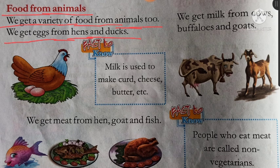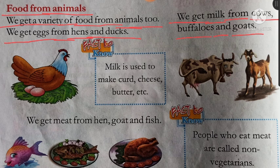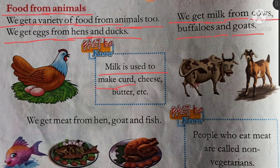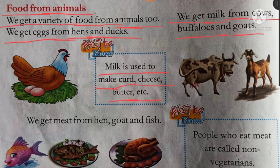We get milk from cows, buffaloes and goats. Milk means doodh, cow — gaay, buffalo — bhains, goat — bakri. Hum doodh gaay, bhains aur bakri se prapt karte hain. Milk is used to make curd — dahi, cheese — paneer, butter — makkhan, ityaadi. Doodh ka prayog dahi, paneer, makkhan banane mein karte hain.